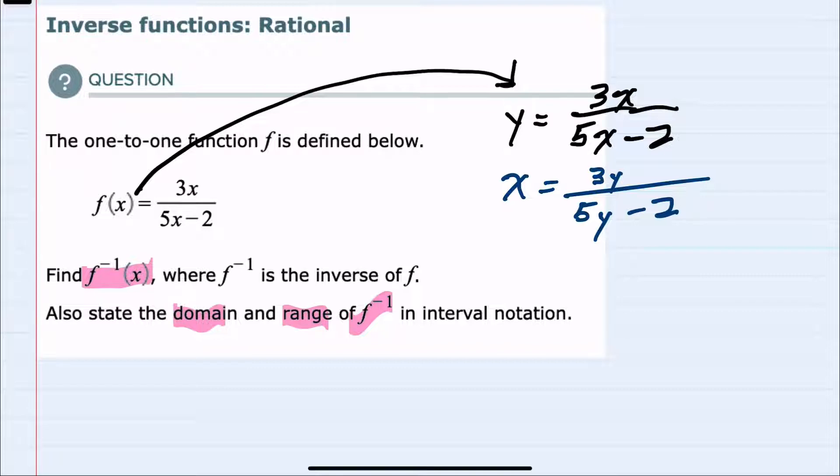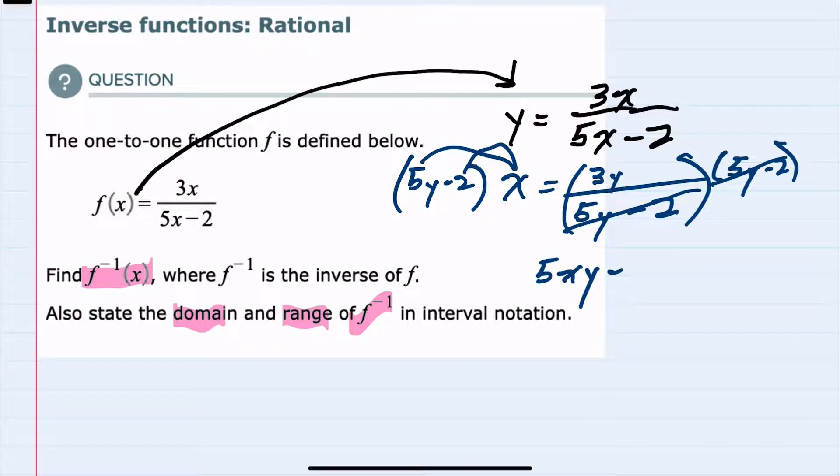And to solve here for y, I would want to first get rid of the fraction by multiplying both sides by the denominator, 5y minus 2. On the right-hand side, that will cancel. On the left-hand side, I can distribute the x to be 5xy minus 2 times x equals, on the right-hand side, we have just the 3y left.